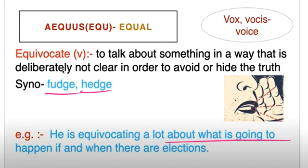Example: He is equivocating a lot about what is going to happen if and when there are elections.